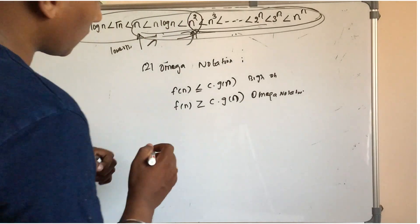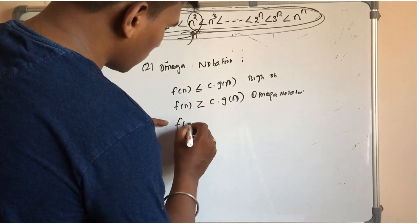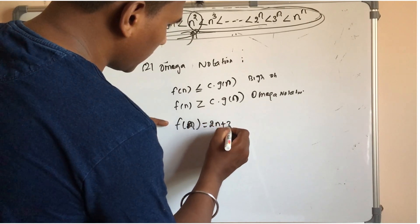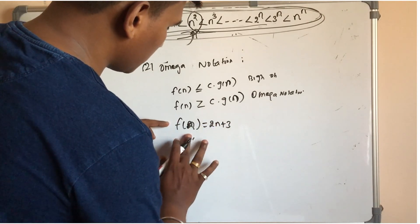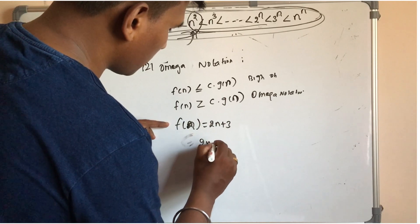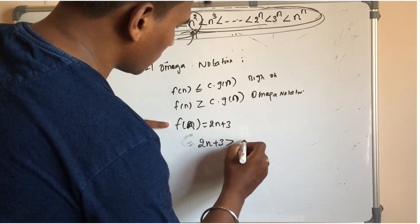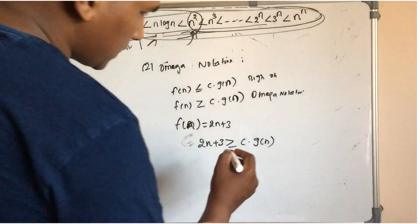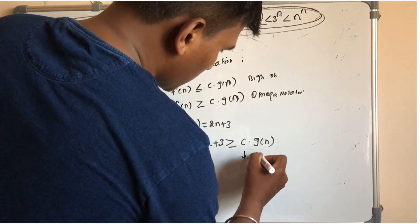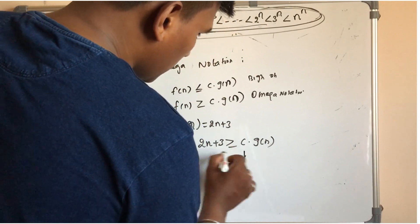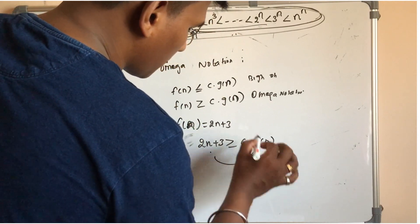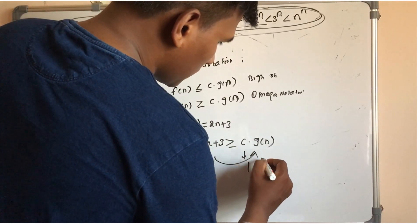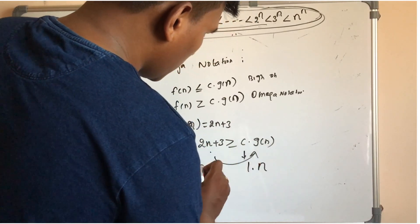For example, f(n) is equal to 2n plus 3. So 2n plus 3 must be greater than or equal to c into g(n). The f(n) is equal to c into g(n).